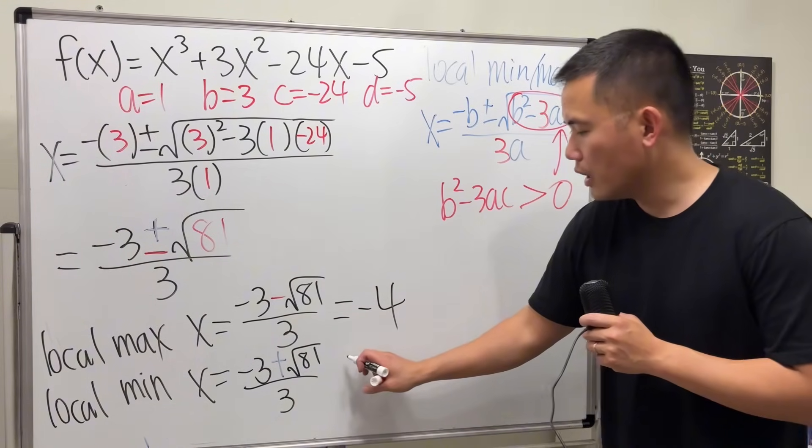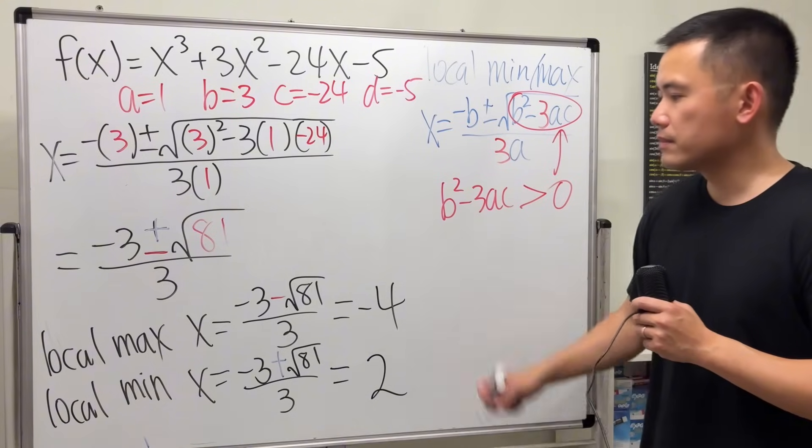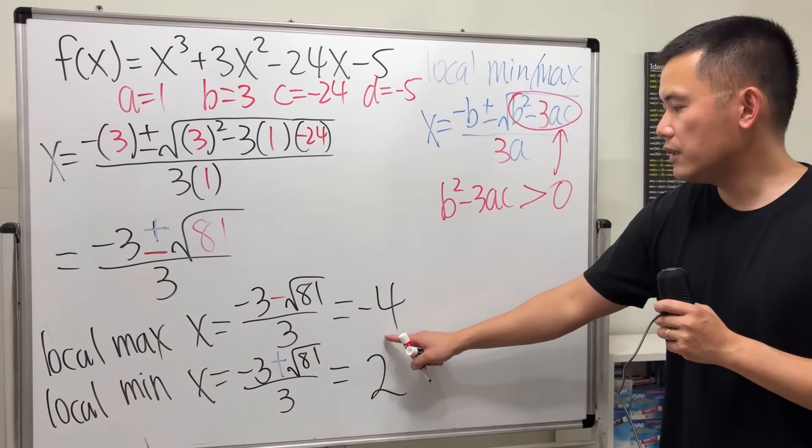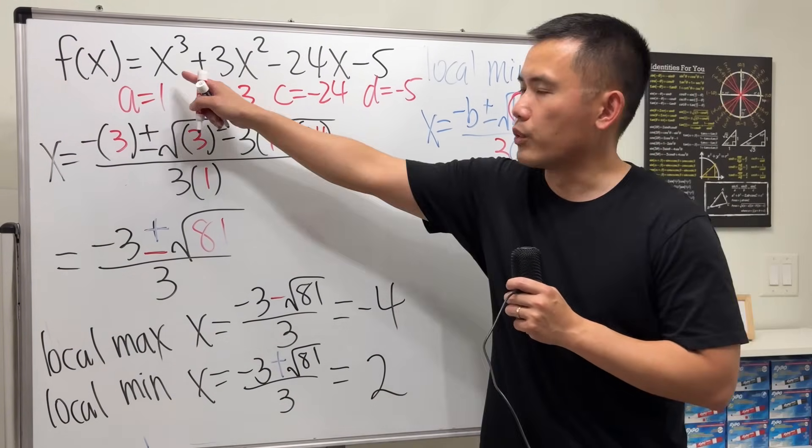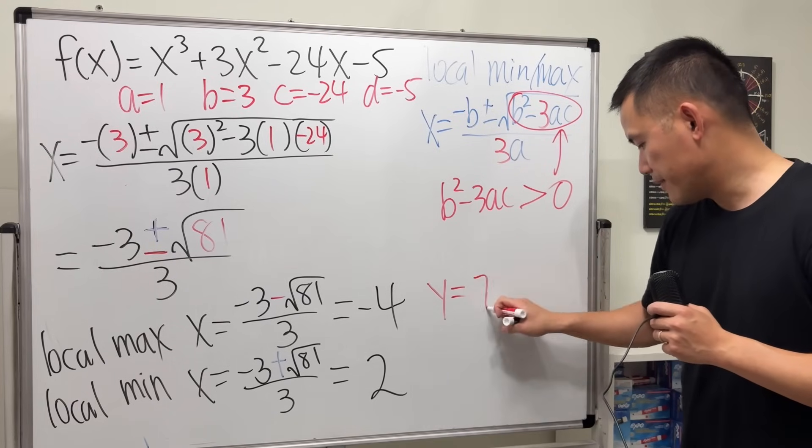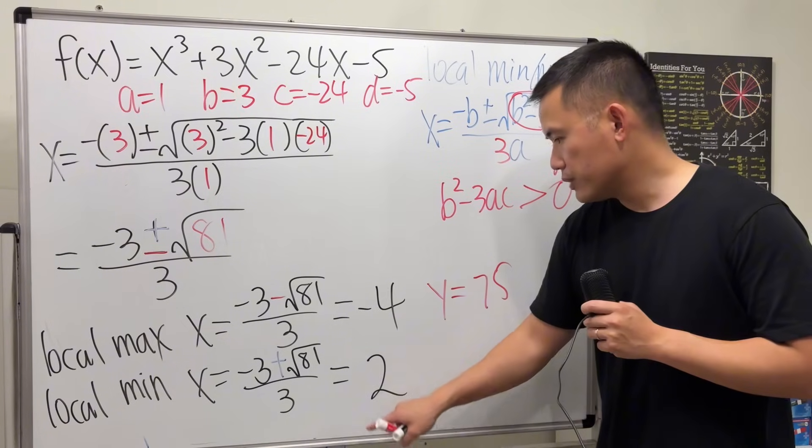And correspondingly, when x is equal to negative 4, if you plug into the original we can get a y, y will be 75. And if you put 2 back to the x, I'll tell you